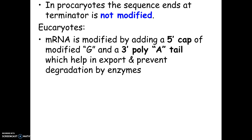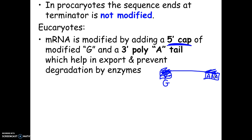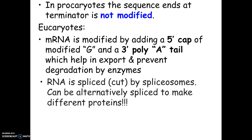How does the mRNA get modified? One thing that happens is it gets a cap on the five-prime end, which is a G. On the other end it gets what's called a poly-A tail — a section of a bunch of adenines. The purpose of this is to help export it from the nucleus and also to prevent enzymes from breaking it down too quickly. Because once it leaves the nucleus, enzymes in the cytoplasm will break the mRNA down — if it stayed there forever, it could keep making more and more proteins. So mRNA only lasts for a certain amount of time before it gets broken down.